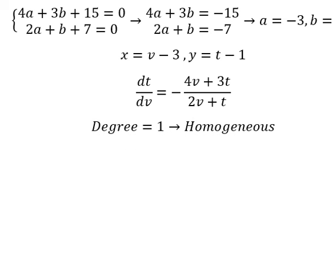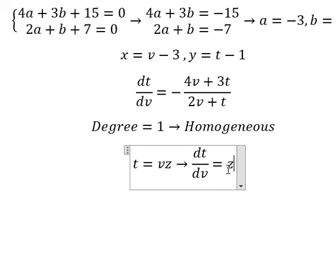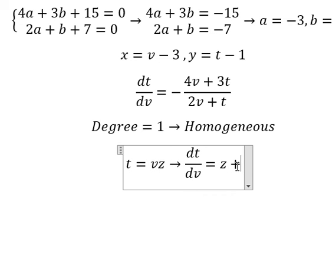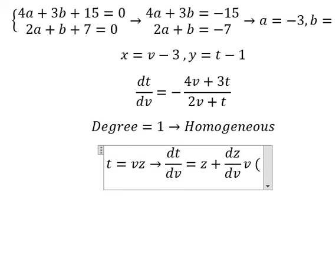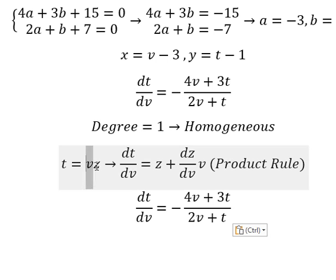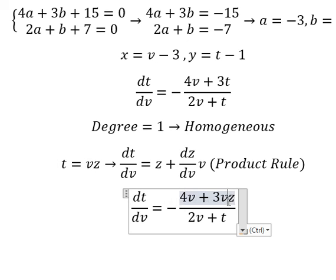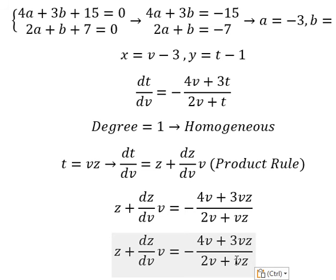So I will put T equal to V times Z. If we do the first derivative for both sides, we need to apply the product rule. The derivative of V gives 1, so we have Z. Then the derivative of Z gives DZ over DV. Multiplied by V, this is the product rule of the derivative. Now I will substitute this back in here.